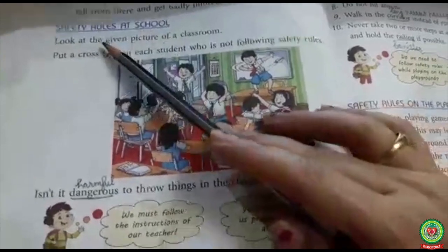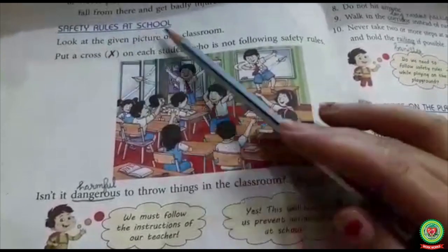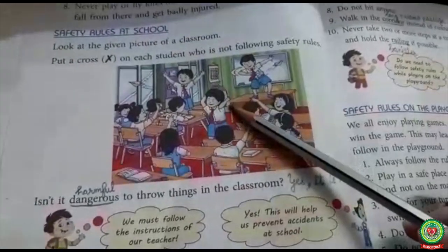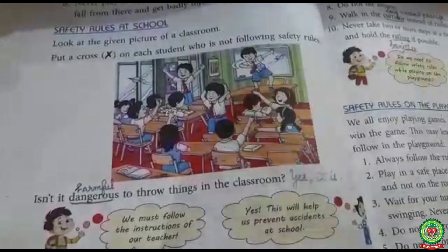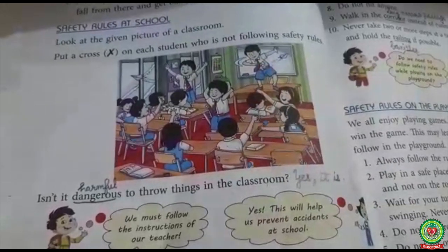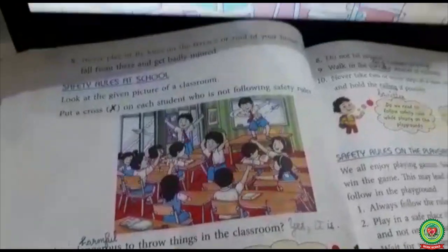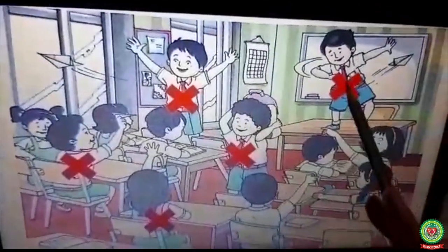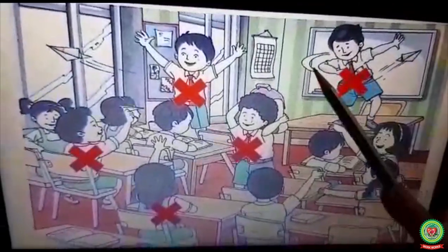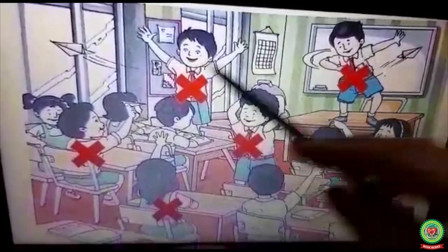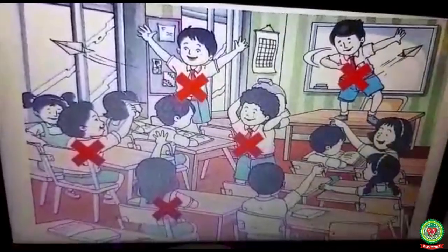Look at the given picture of a classroom. Put a cross on each student who is not following safety rules. Look at these boys — they are jumping on the benches, so put a cross on them.